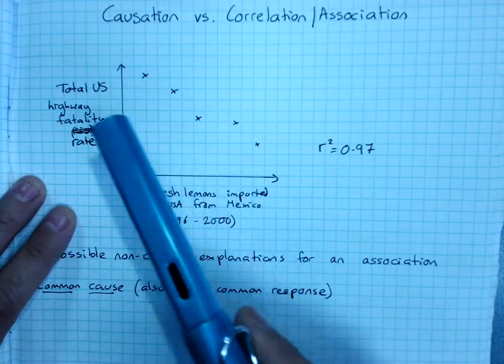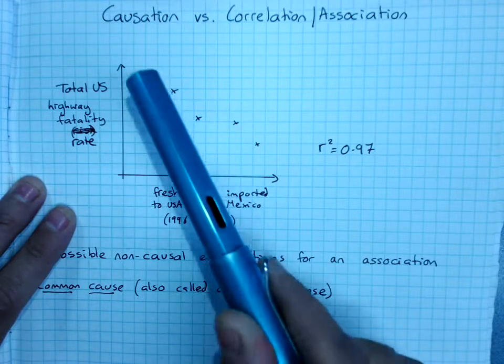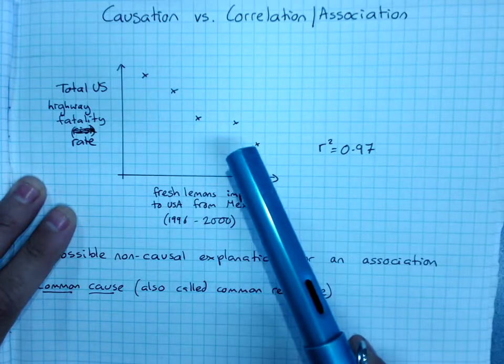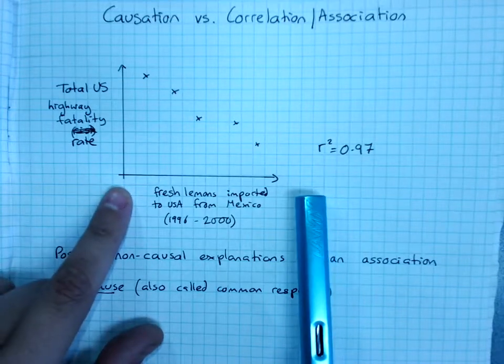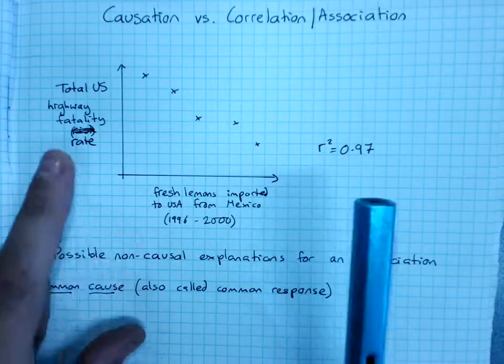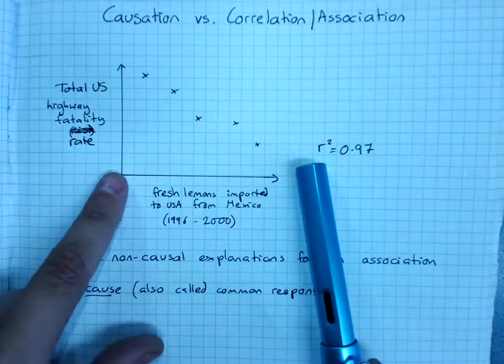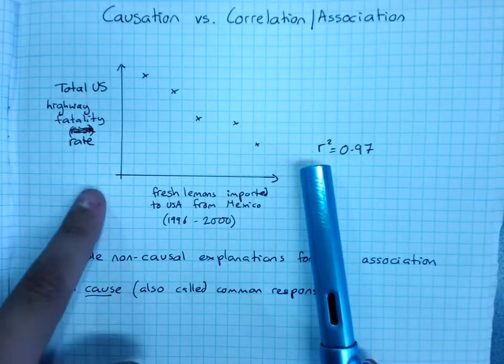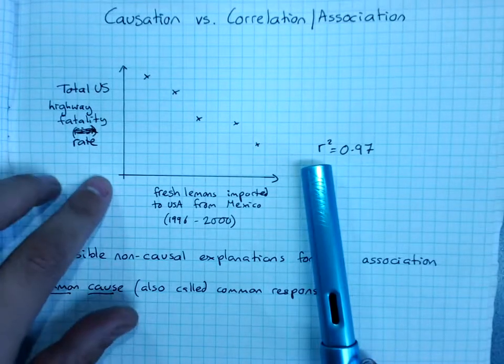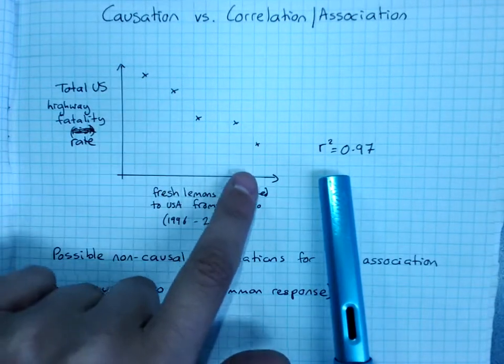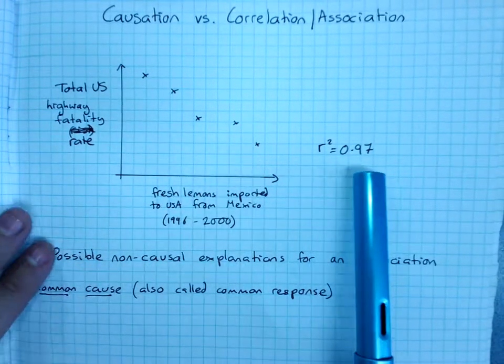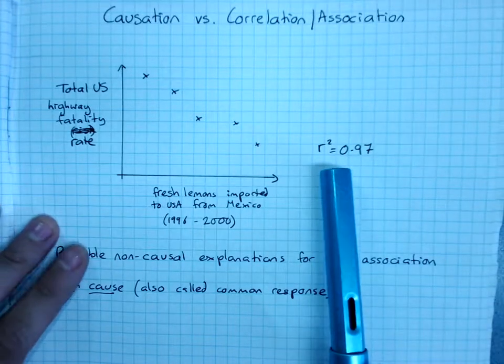We can say that it explains a change in the other based on the relationship. So here we have the number of fresh lemons imported to the USA from Mexico over a period of five years, and what happened to the total US highway fatality rate over that time. And it's a beautiful negative strong association with an R squared of 0.97.